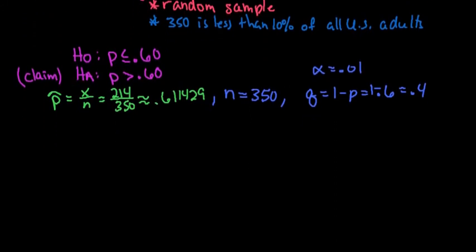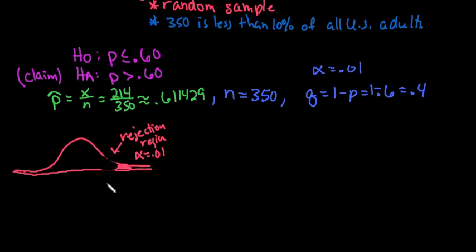We are going to draw out our picture. For this one, we do have a right tail test, and we're using a rejection region. So in a rejection region, what we have to do is we have to find the critical value. This is our rejection region. The rejection region for this one is our alpha level. Since our alpha level is 0.01, we would only shade a little bit of this. Our rejection region is where we make our decision whether or not we are going to reject or fail to reject.